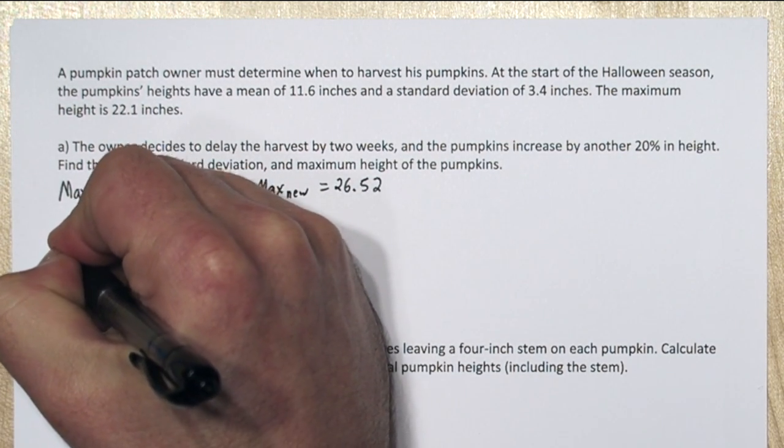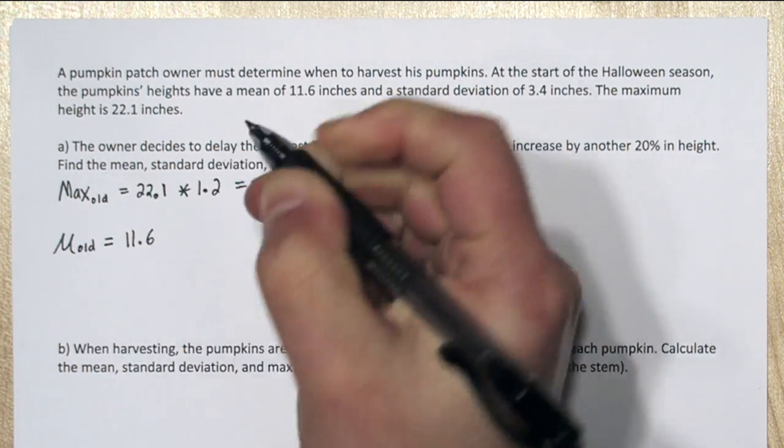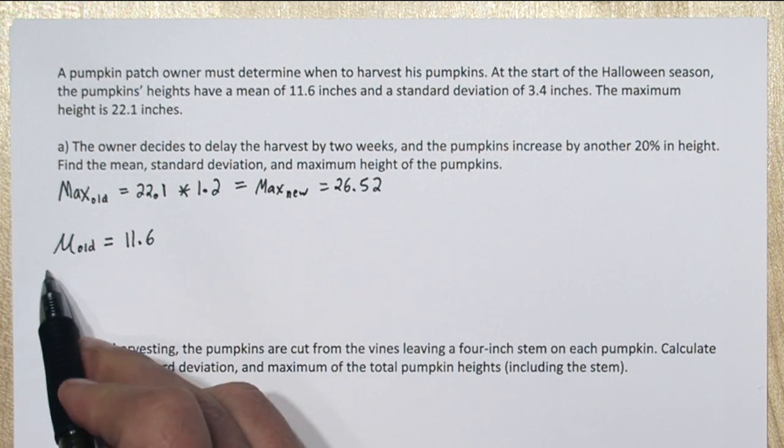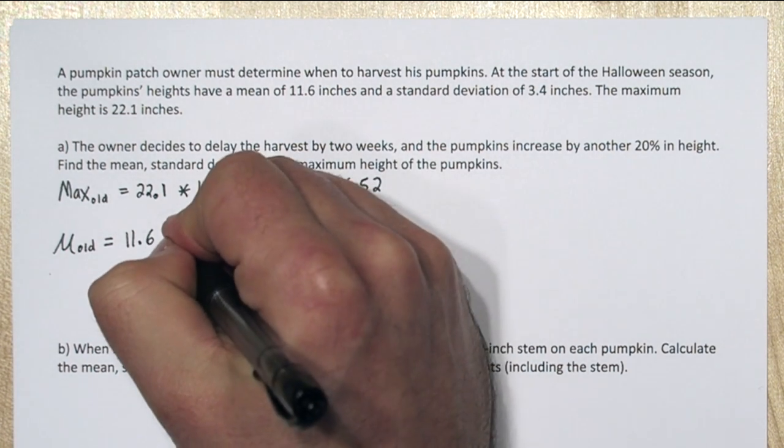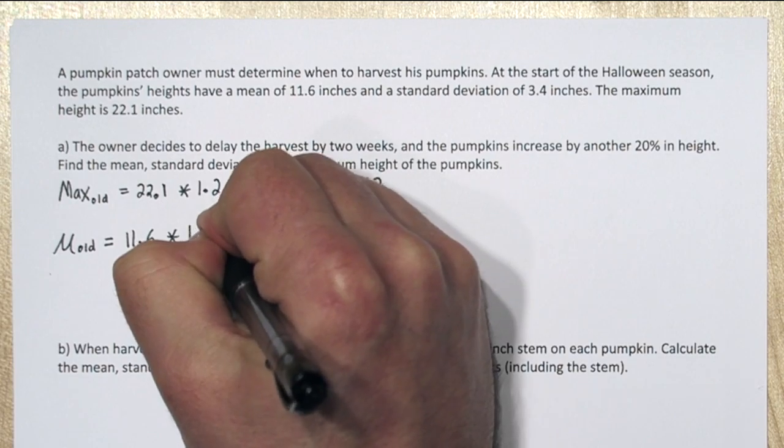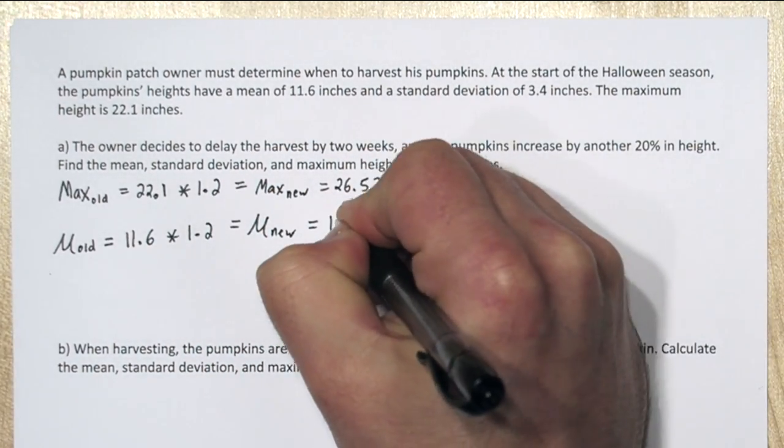Now if every single pumpkin increases by 20%, that means the mean of all the pumpkins is also going to increase by 20%. So mu sub old, the old mean was 11.6, we're going to multiply that by 1.2 as well, and we calculate the new mean as 13.92.